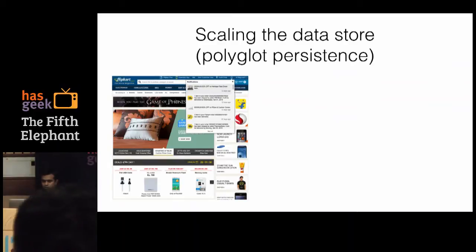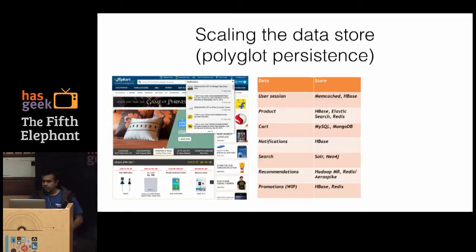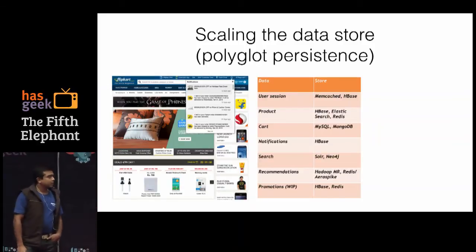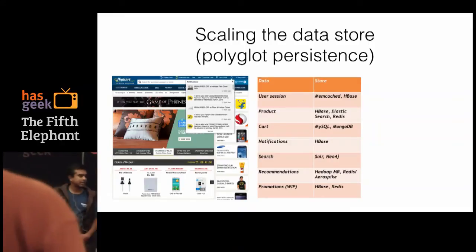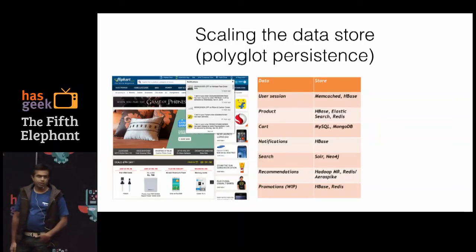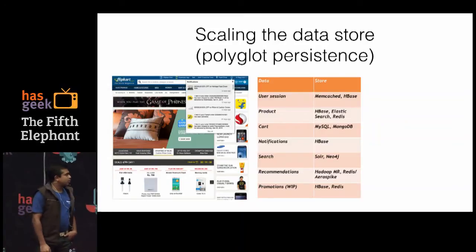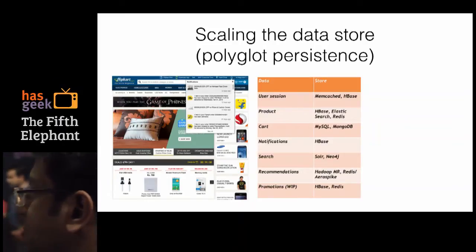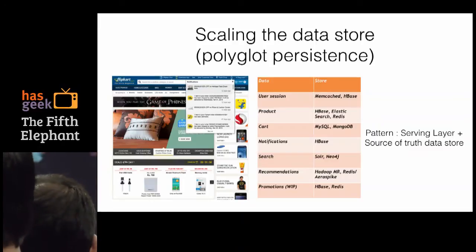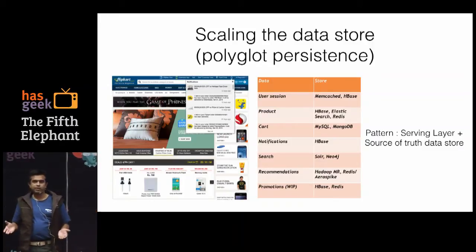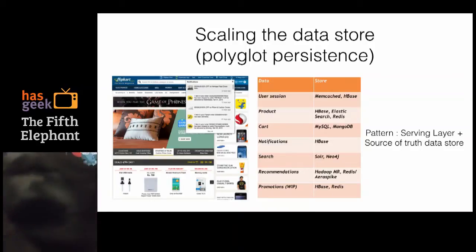Fast forward to what Flipkart looks like today. Our persistence layer: user sessions use Memcached with HBase as backend. Product catalog data comes from HBase, Elasticsearch, and Redis. Cart is MySQL and Mongo. Notifications is HBase. Search is Solr and Neo4j. Recommendations are generated in Hadoop MapReduce and served out of Redis or AeroSpike. Promotions is HBase and Redis. A very common pattern emerging is a source-of-truth data store with a serving layer in front of it.